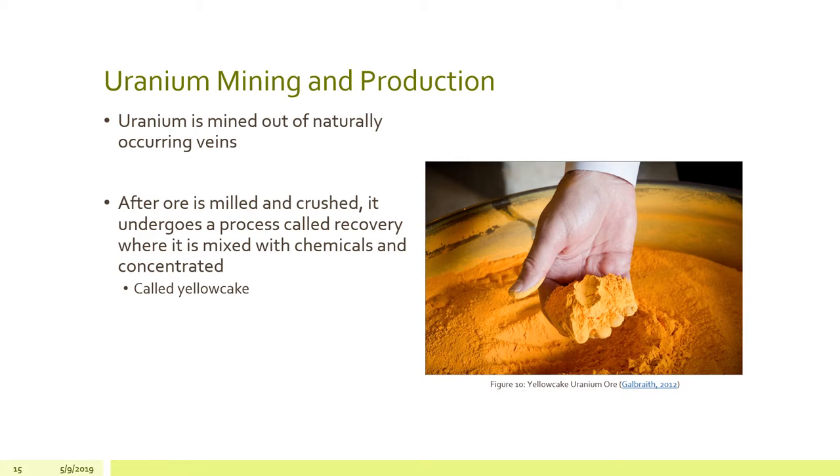So uranium is mined out of naturally occurring veins. And after it's milled or crushed, it undergoes a process called recovery, where it's mixed with chemicals and concentrated. Sulfuric acid is usually used in uranium recovery. And the result is what's known as yellow cake, pictured on the right.